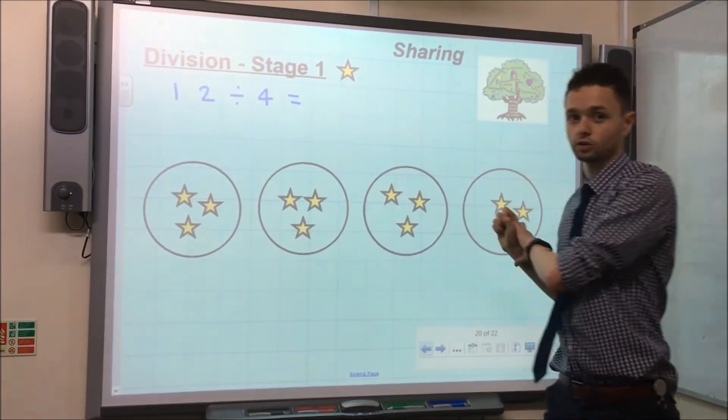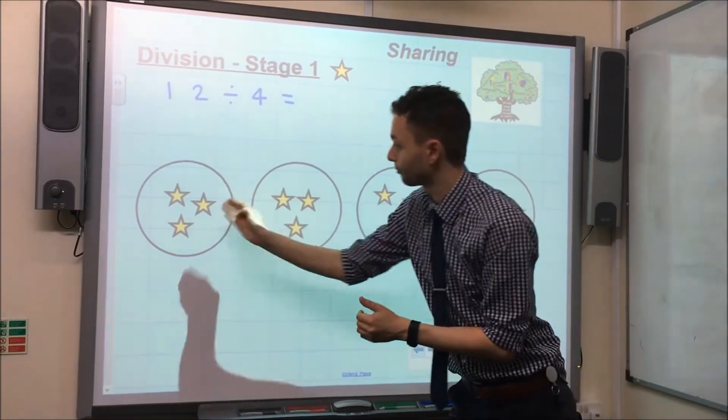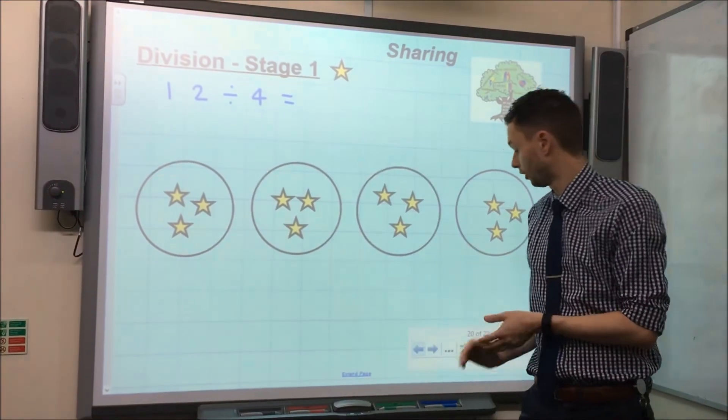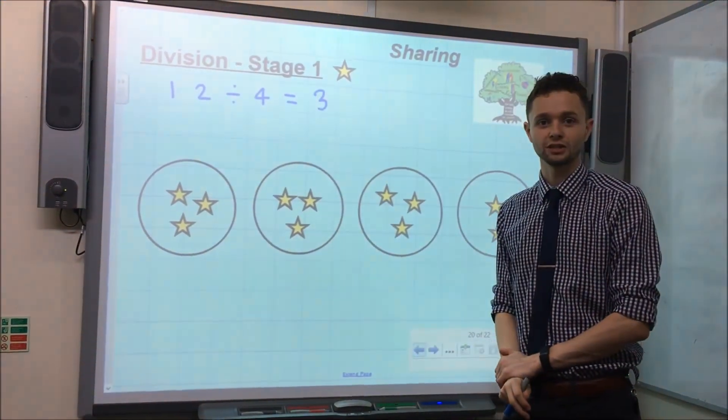So I have shared 12 between 4 and I can see that in each section I have got 3 counters, which means that 12 shared by 4 will give us the answer 3. And that is Division Stage 1.